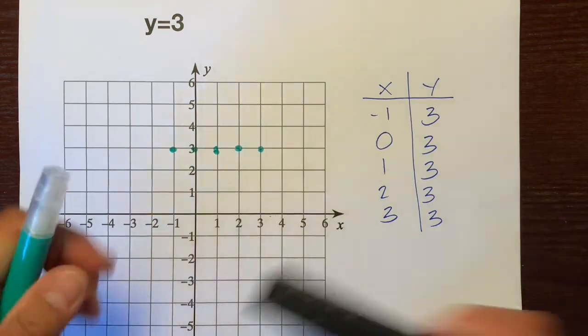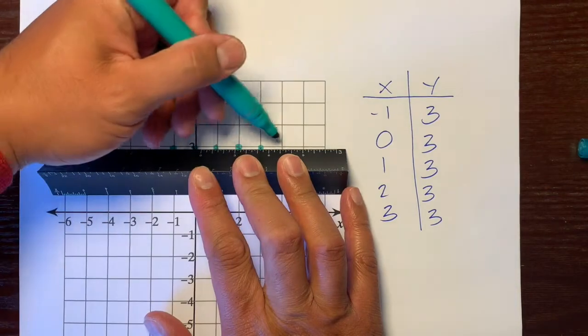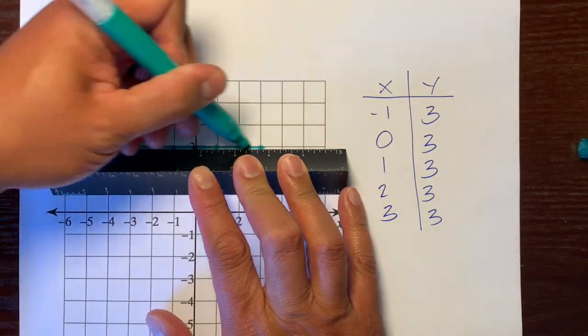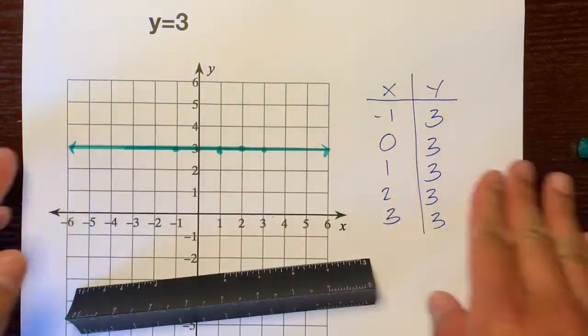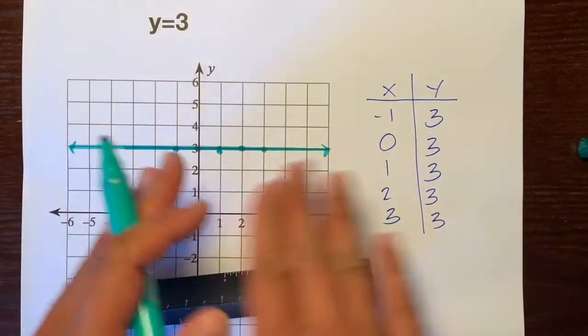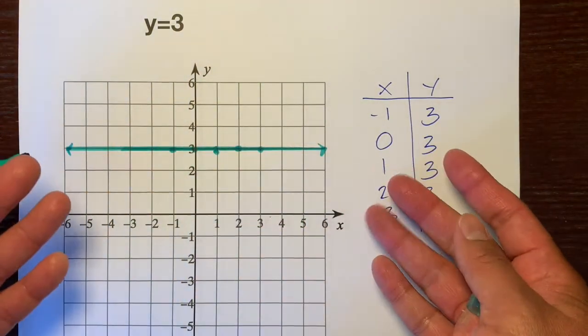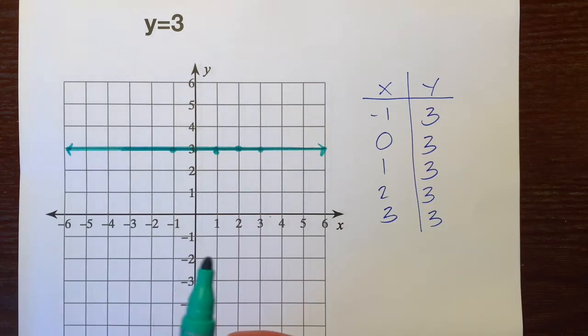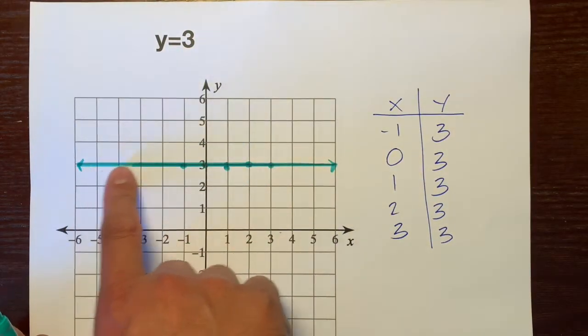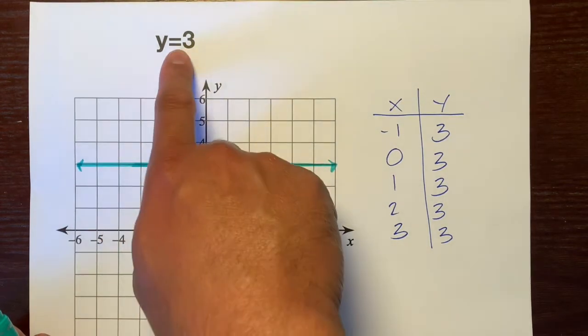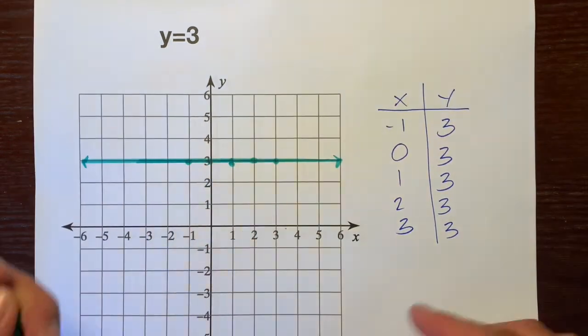If we connected all these points, take our straight edge, and just connect those points, and just keep on going, we will have a horizontal line. A horizontal or a sideways-y line. Horizontal like a horizon. It's sideways. Whenever our equation is just y equals a number, we'll have a horizontal line. And this one's at 3. So y always equals 3, whatever the x is.